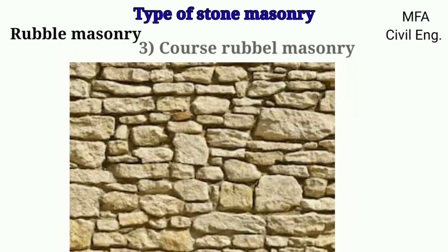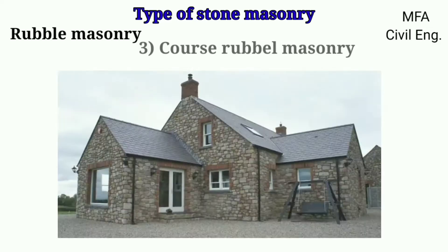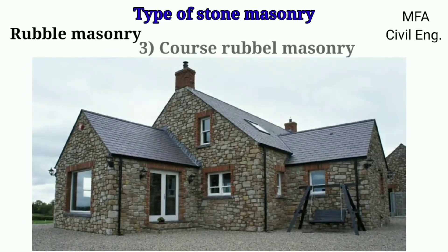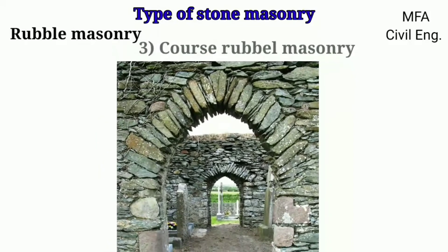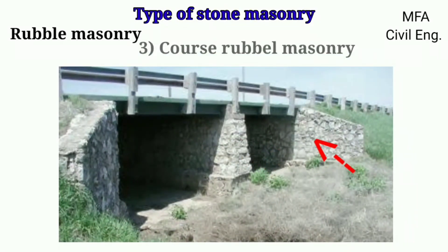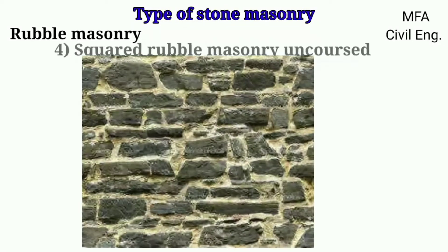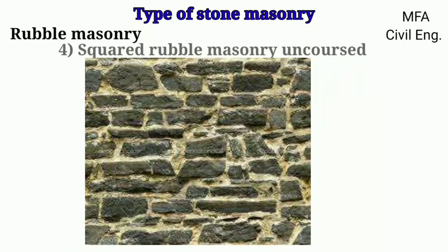Coarse rubble masonry is commonly used in building construction where the wall height is low, such as in residential buildings, public buildings, and piers and abutments of small bridges.